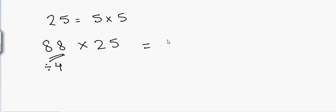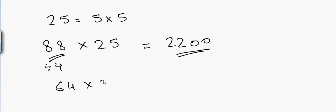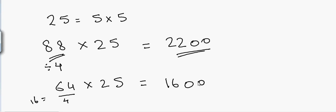88 divided by 4 equals 22, and then I put 00 at the end, so the answer is 2200. Again, if I have to multiply 64 by 25, that will be 64 divided by 4, which is 16, so we have 1600 as the answer.